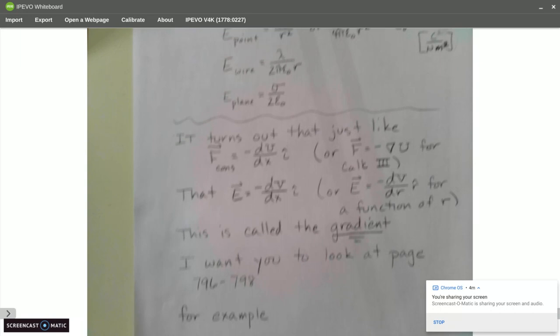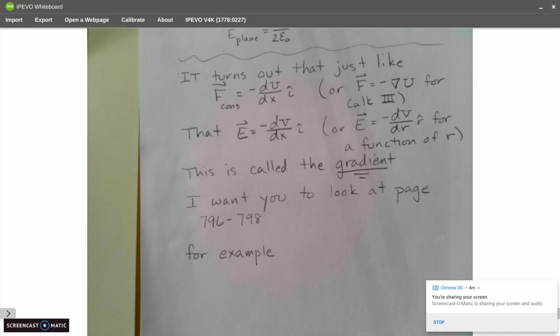So it turns out, just like a conservative force is minus the derivative of potential energy, the electric field is the negative derivative of electric potential. So we're going to start using that. We will actually use the opposite. We'll multiply both sides by dx and negative, and then we will integrate. But this is just looking ahead.